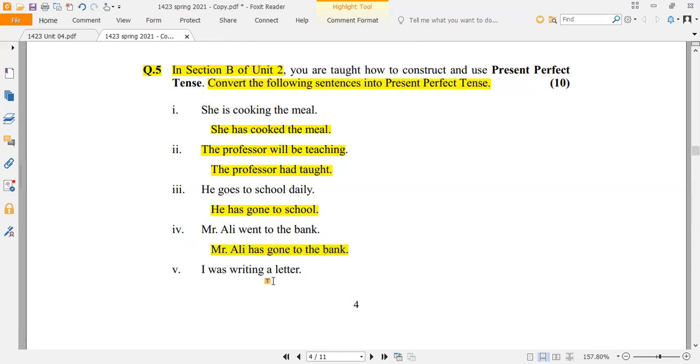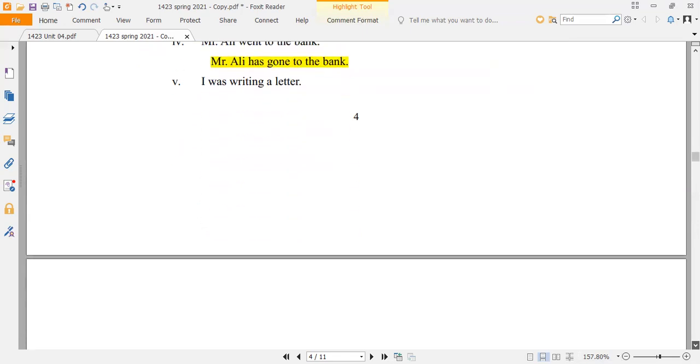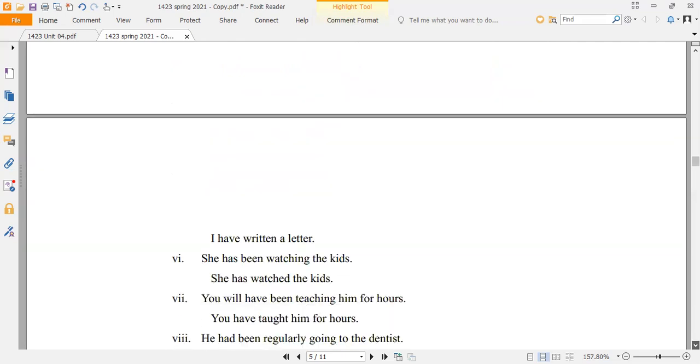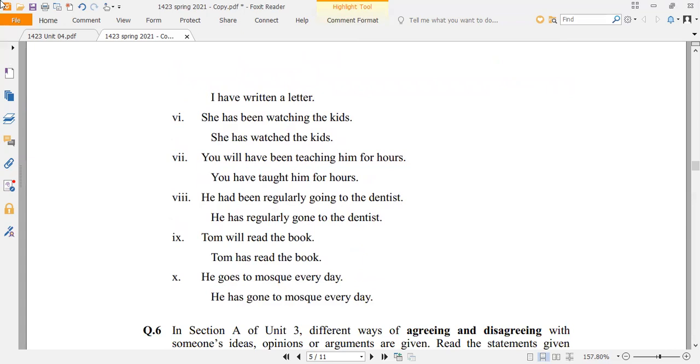I was writing a letter. This is past continuous tense. How do we convert it to present perfect? Here it is: I have written a letter.